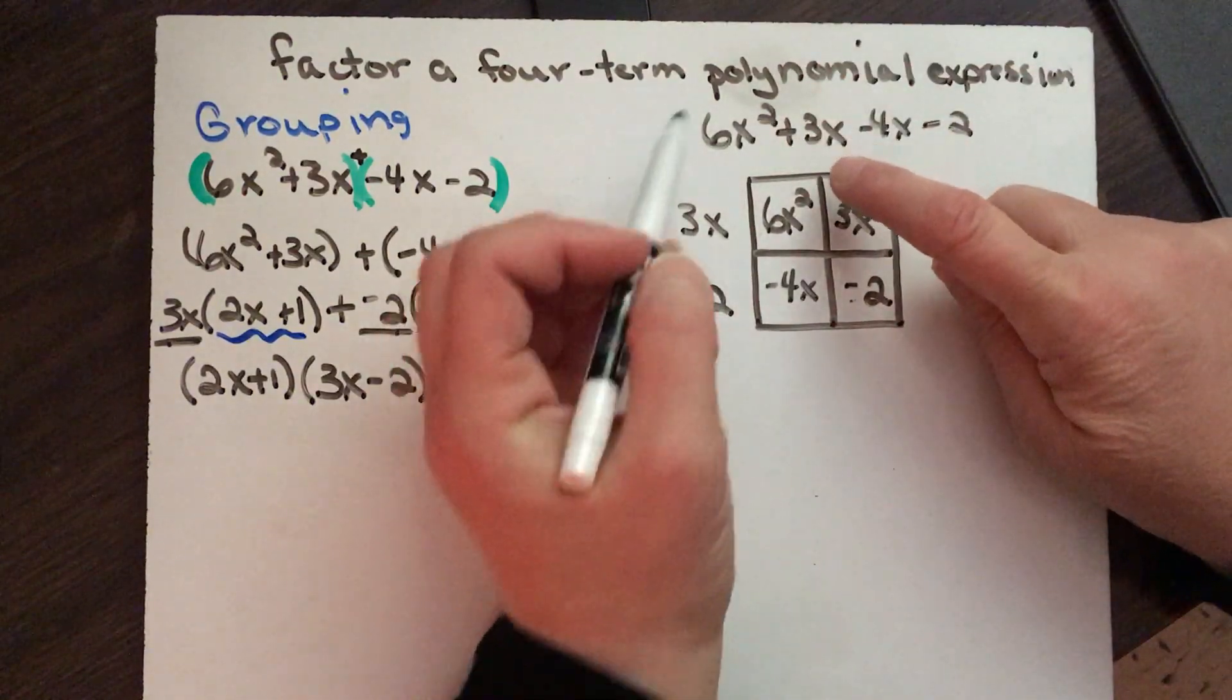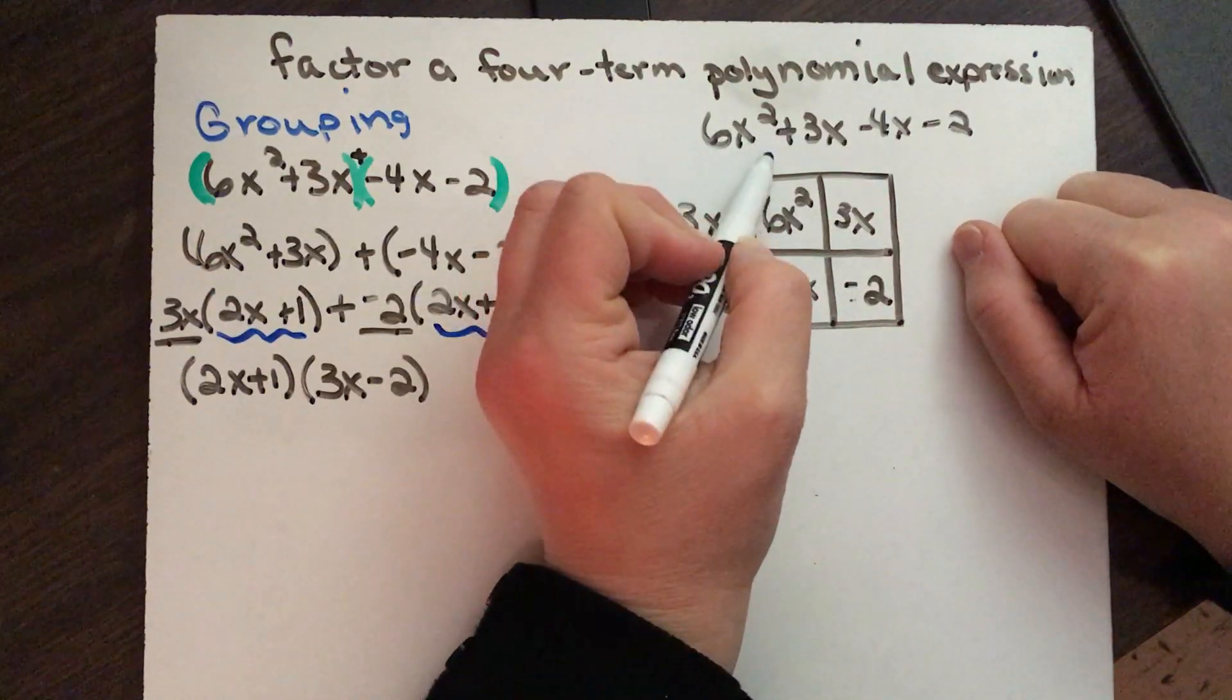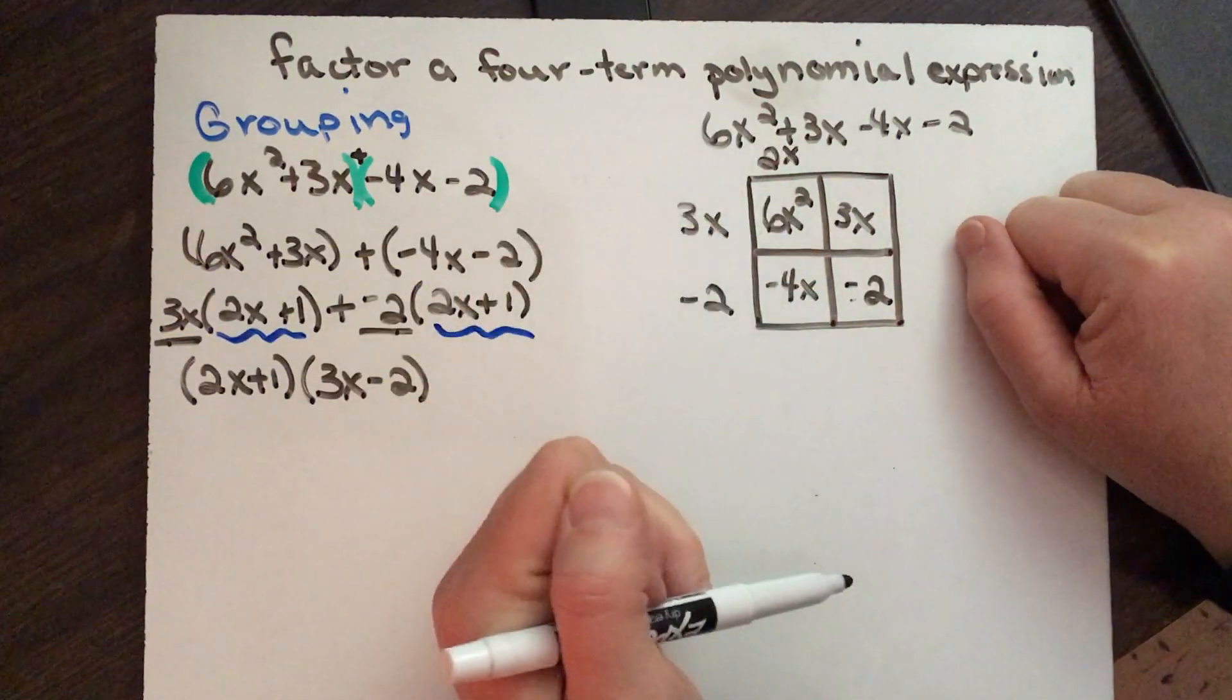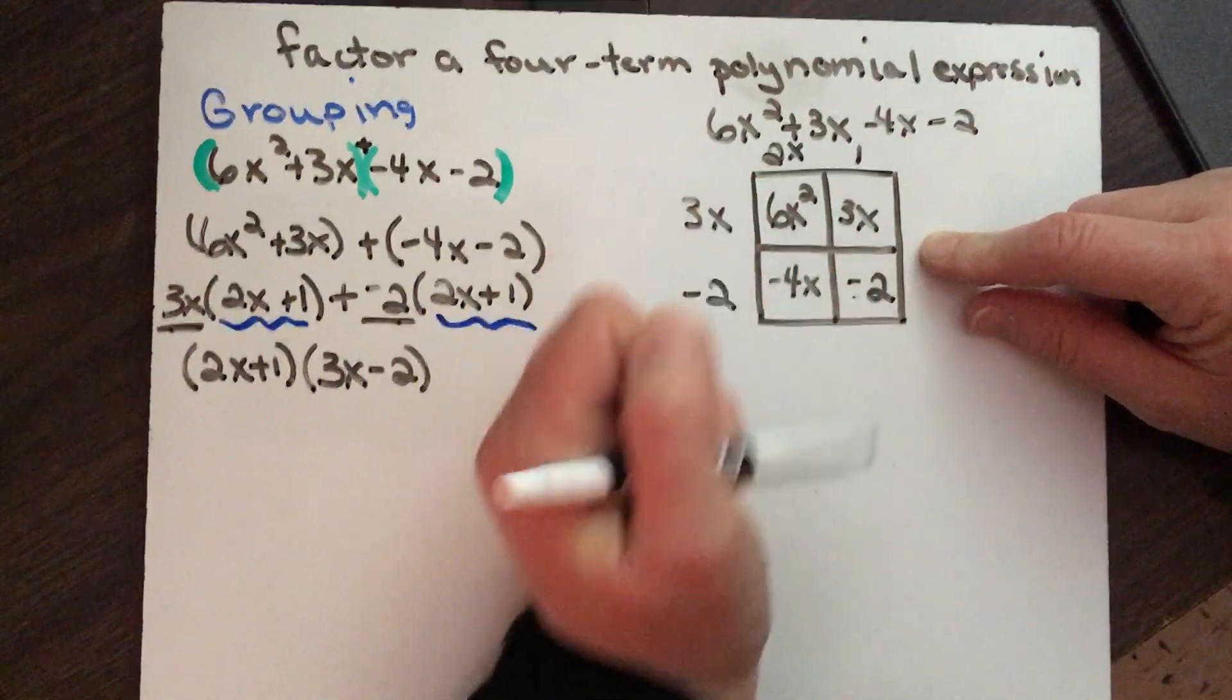So up top here going this direction, they share a 2 and an x would be their greatest common factors, and here the only thing that they would share would be a 1.